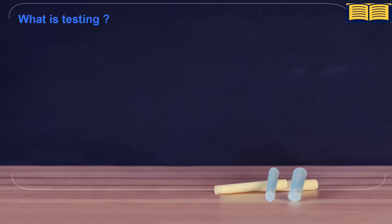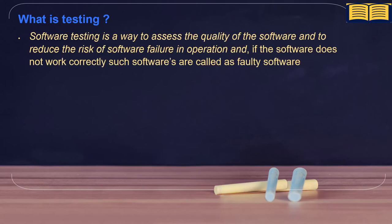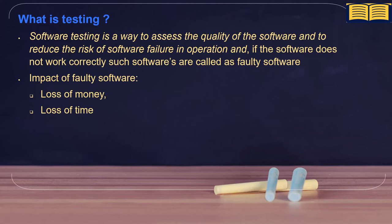In 'what is testing', we covered the definition of software testing: software testing is a way to assess the quality of the software and to reduce the risk of software failure in operation. If the software does not work correctly, such software is called faulty software. We also covered the impact of faulty software: loss of money, loss of time, loss of reputation, and injury or death.